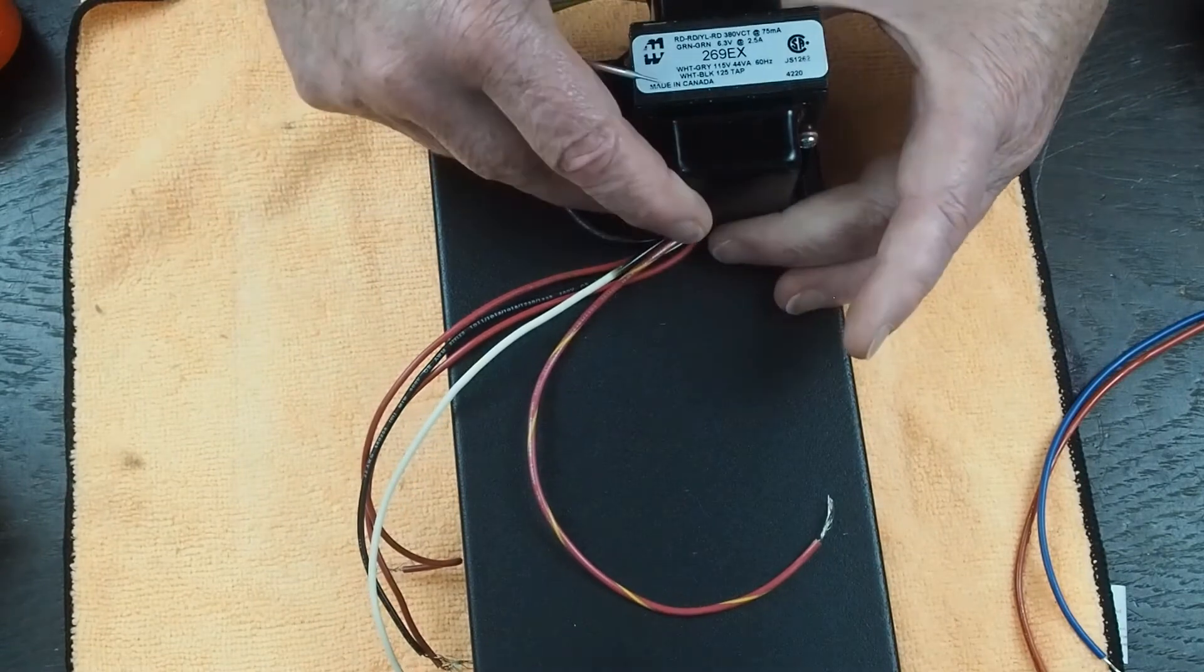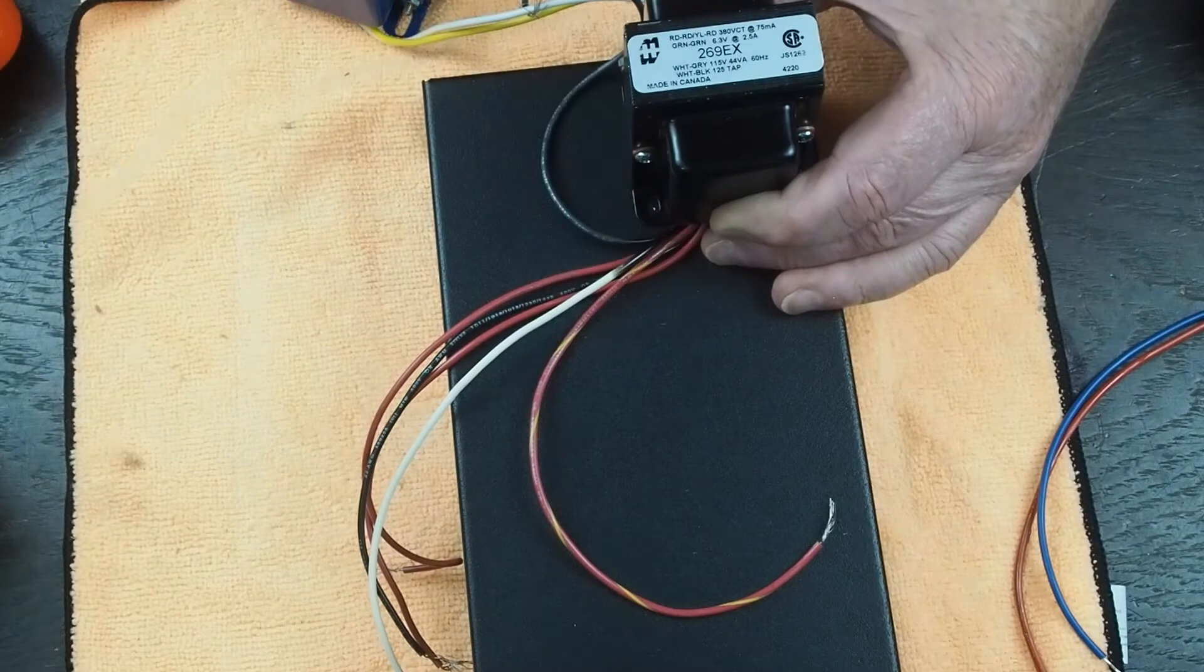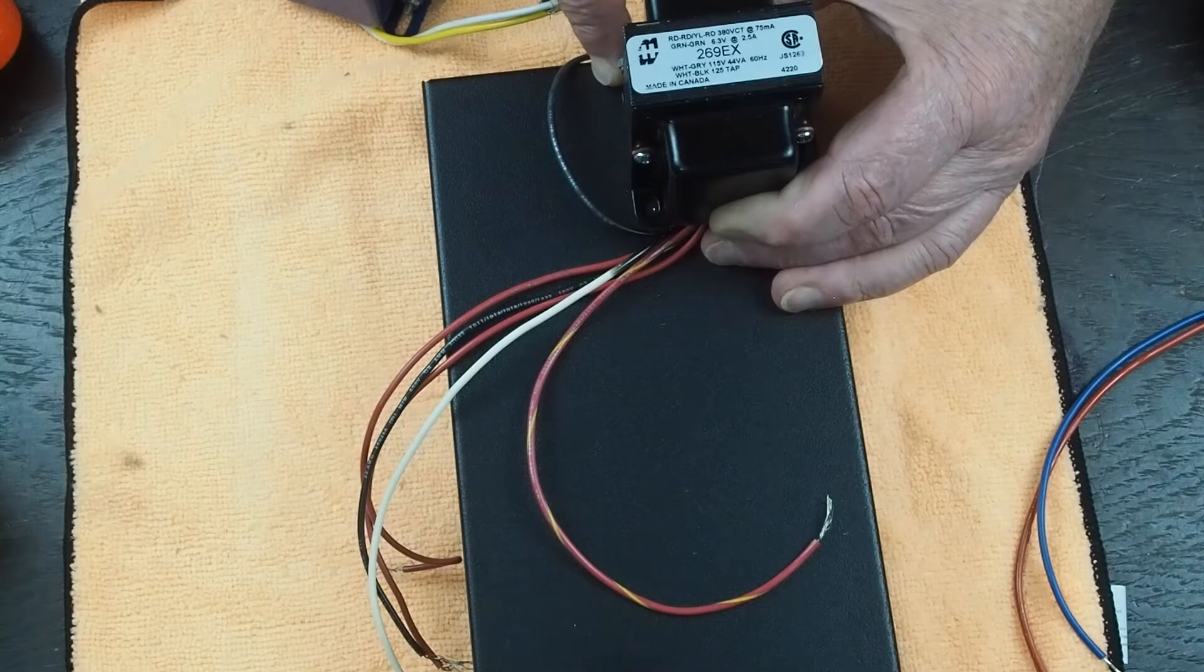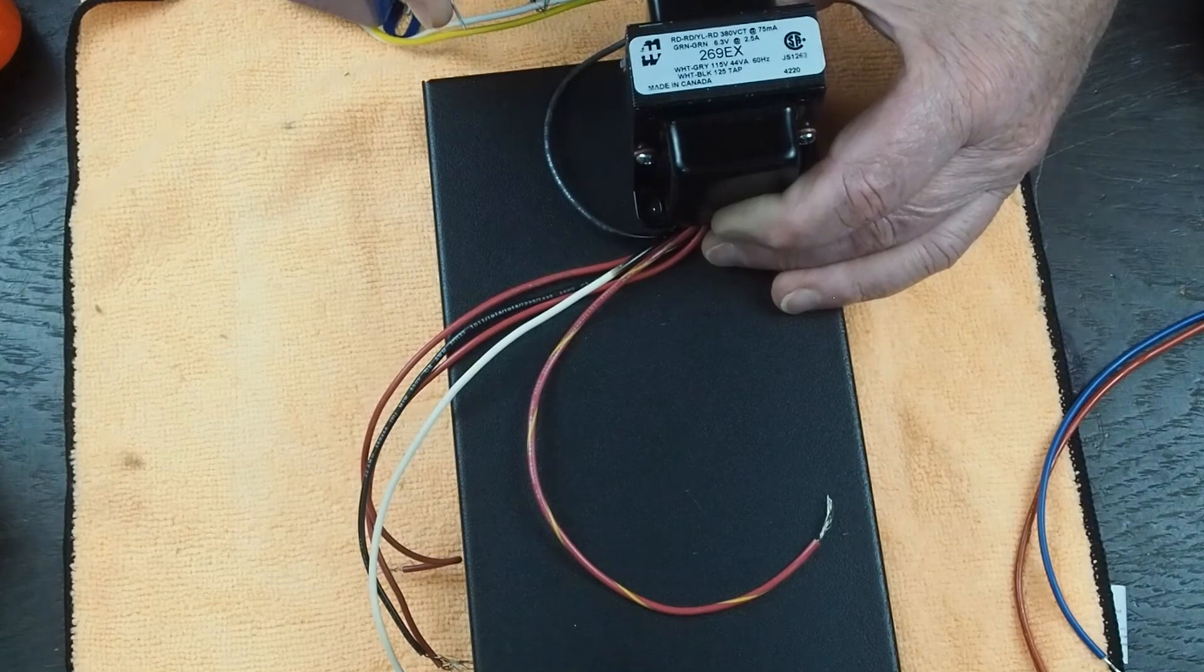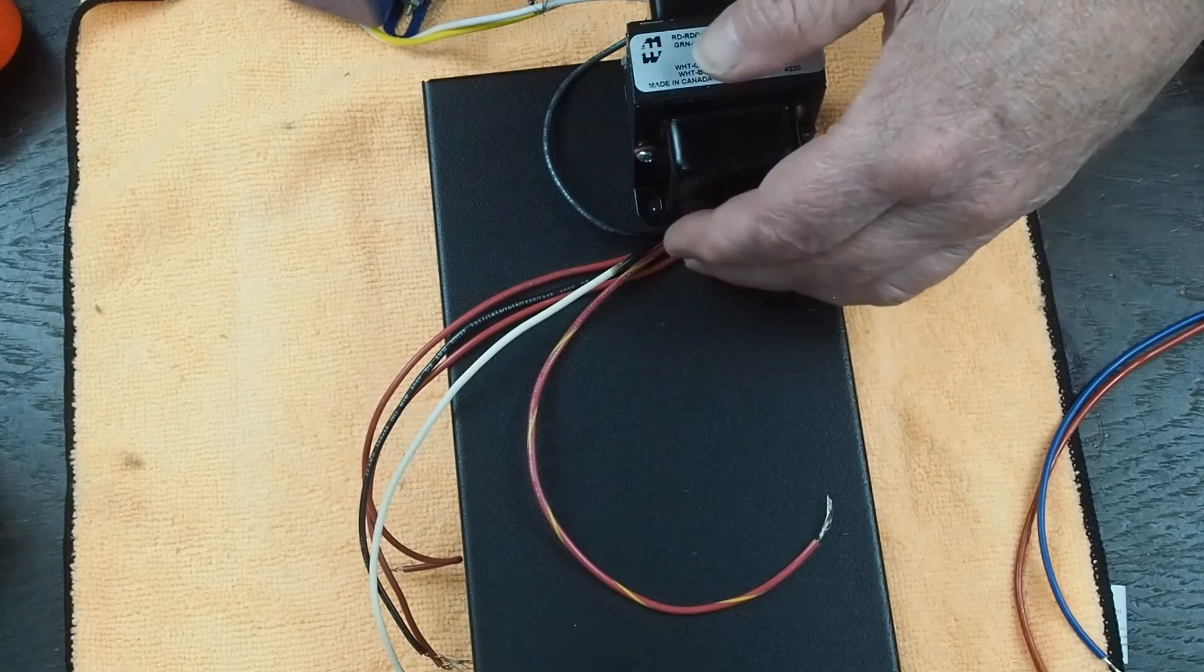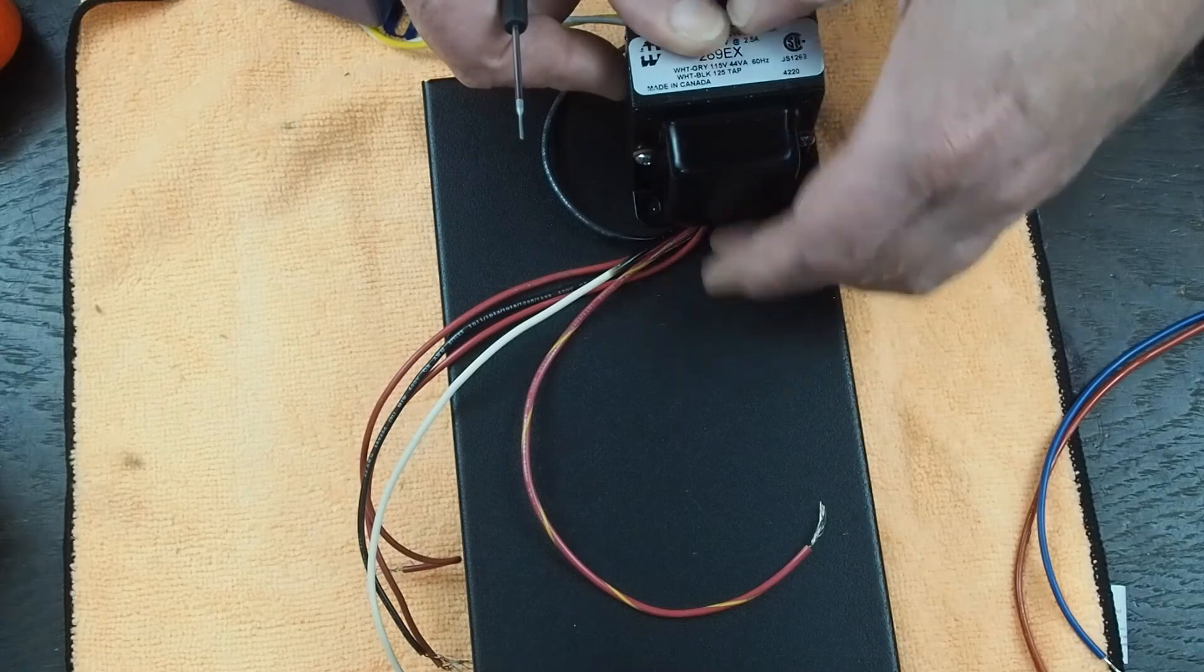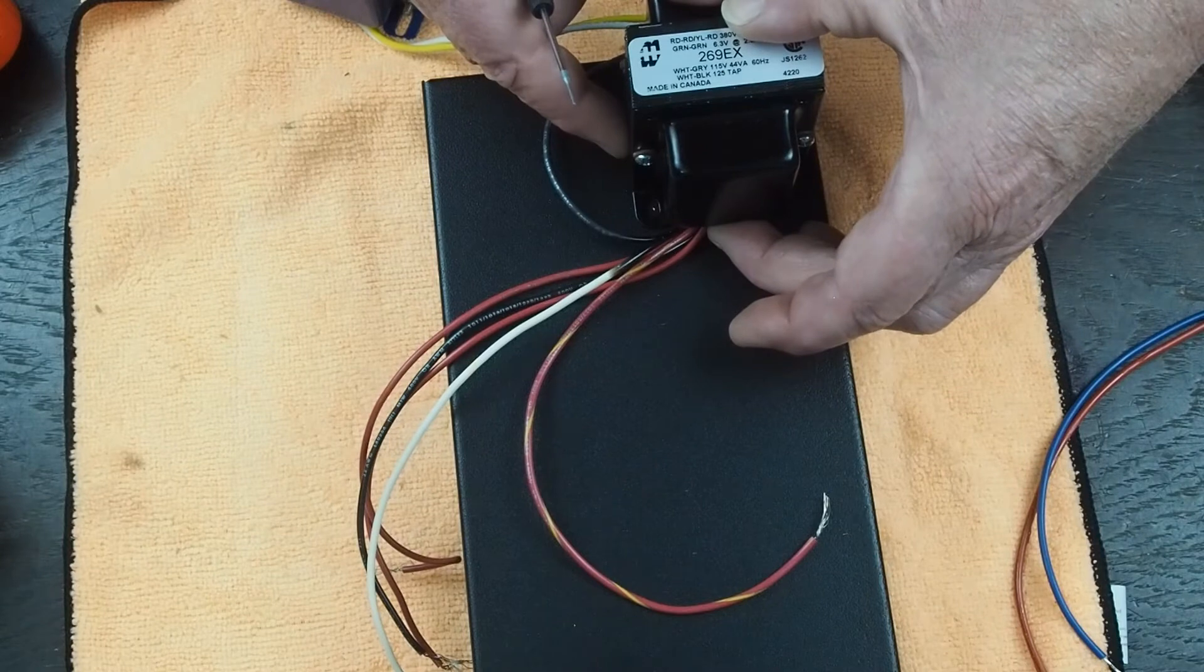Obviously you can paint these transformers or the output transformer end bells different colors if you want to do that. The Edcore ones are powder coated from the factory, which makes them harder to paint over. You really need to really scuff up that powder coating well if you're going to try to paint over the top of it.